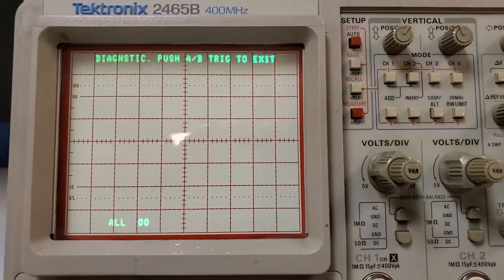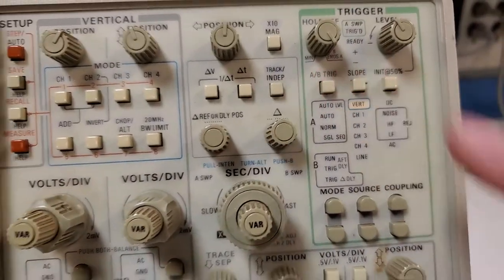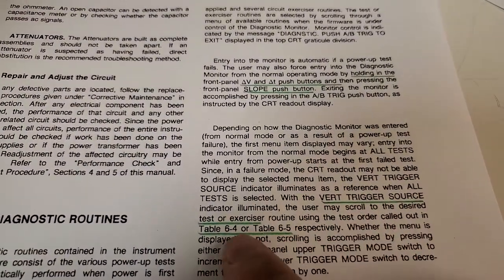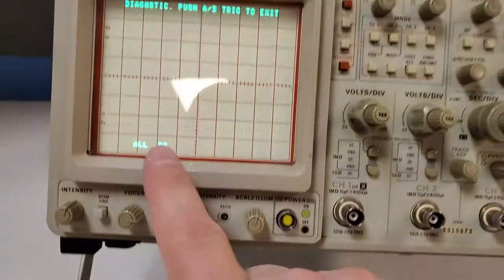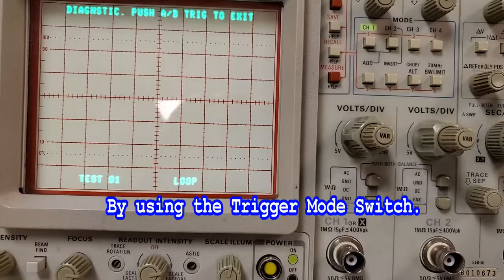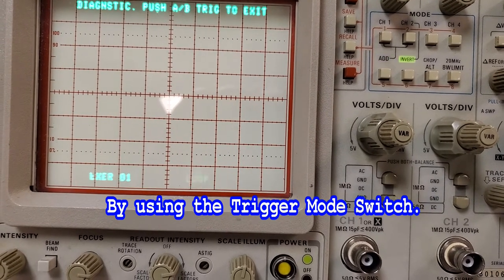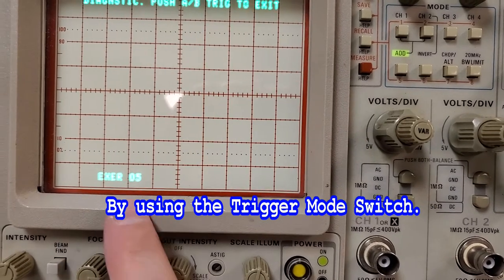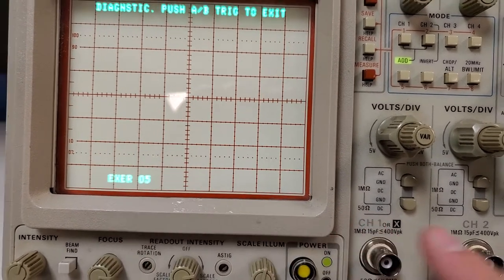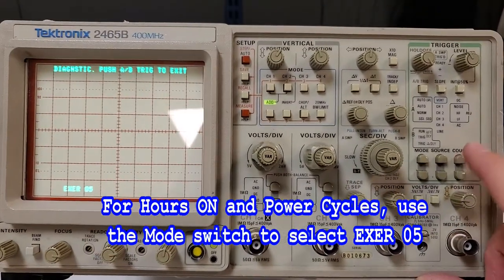And you can see it takes you into the diagnostic test. If you want to get out you just push the A/B trigger, but we're not going to do that. It also tells you right here that you can go between the test that you want or the exercise test, which will show down here, by using the mode into the different tests. One of the things he asked for is how do you tell what the hours are?